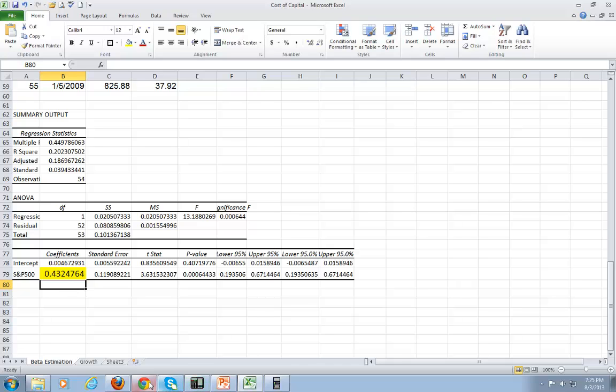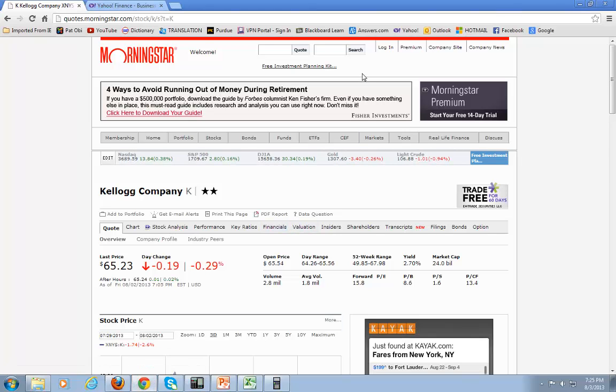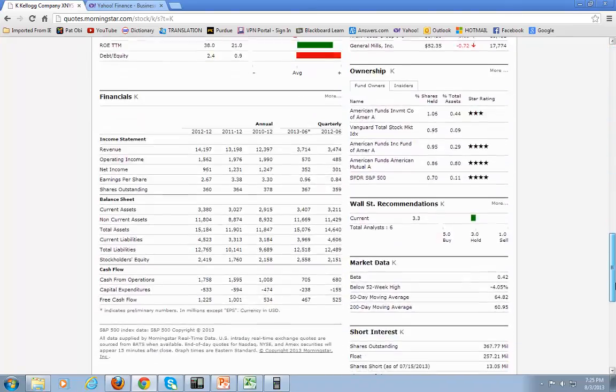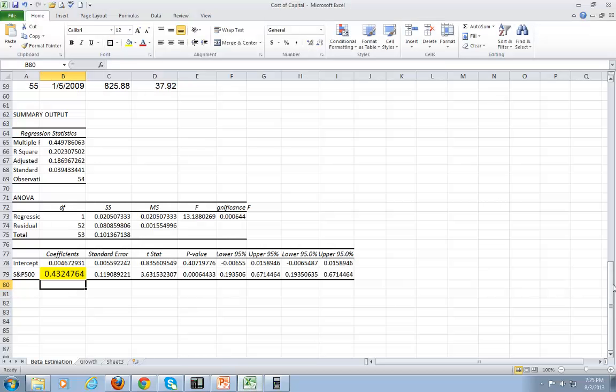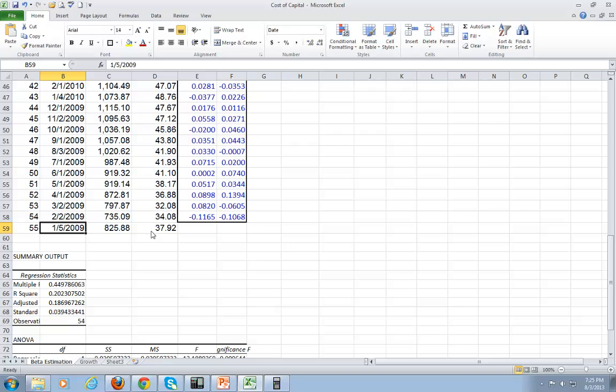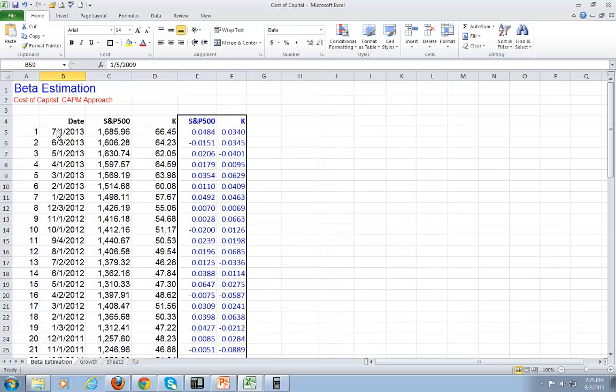You can also find beta estimates in a number of places on the web. For example, one of my favorite websites is Morningstar.com. If you go to Morningstar and type in K, the stock symbol for Kellogg's, you'll get this market data. If you scroll down here for market data, you find beta to be 0.42, pretty close to the calculation we just performed using monthly data from January 2009 all the way to July 2013.